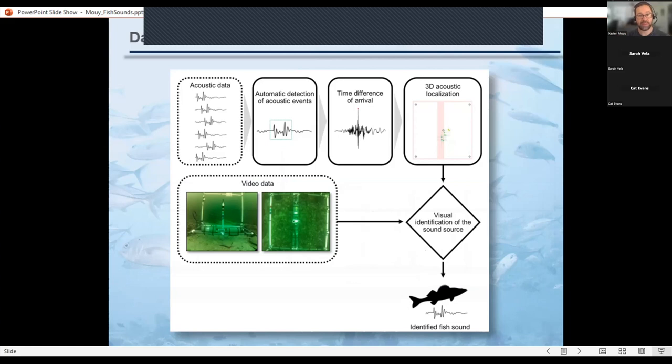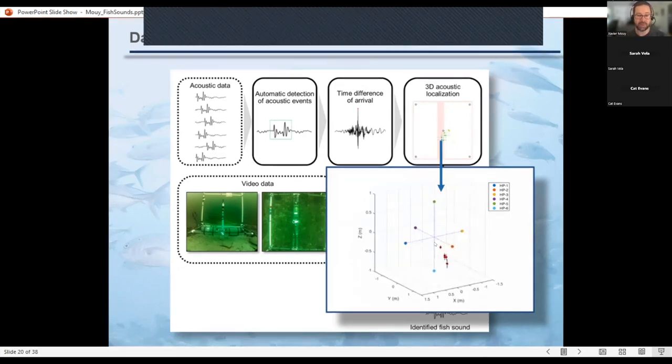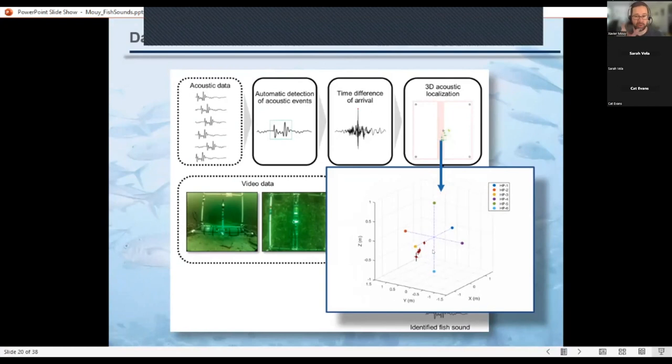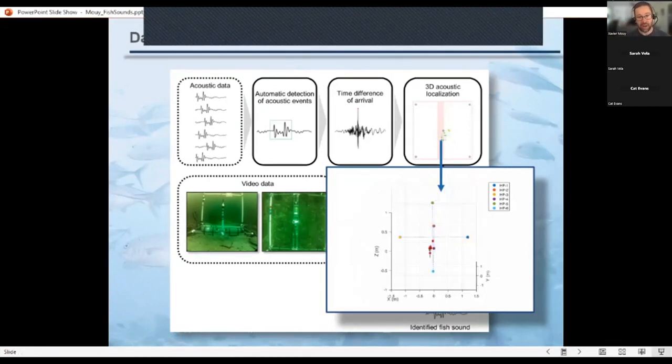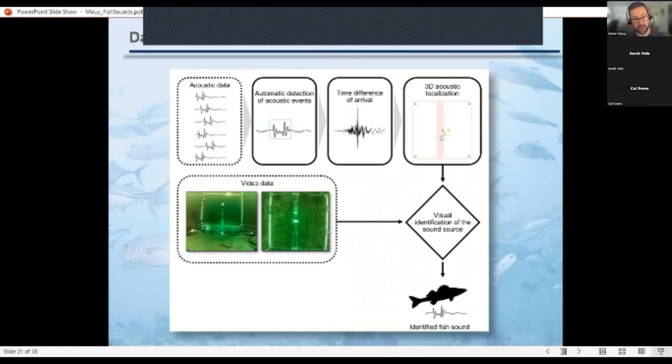Now that we have that, then for each of the events, you calculate the time difference of arrival of that sound between each pair of hydrophones. And with this, you can do 3D localization. So that's an example here where you have an array with six hydrophones and the red dots here with the arrows denote where the localization of the sound and the crosses denote uncertainty in the localization process. Then once we have that, we know that the sound is coming from this specific location in the array. If it's in the field of view of the camera, then you can have a look at your video data and try to see what animal or what was the source of that sound. And then you can basically associate sound to species and sometimes behavior. And basically you kind of build up this catalog of fish sound for each species.